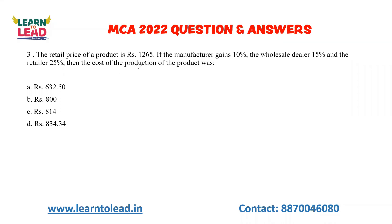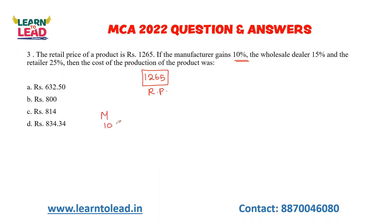The retail price of a product is 1265. If the retail price includes the manufacturer gaining 10% profit, the wholesale dealer gaining 15% profit, and the retailer/shop owner gaining 25% profit, we need to find the cost of production of the product.